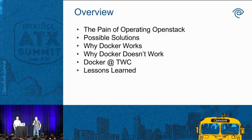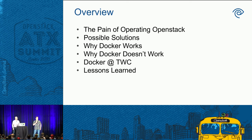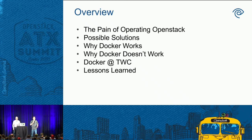An overview of what we're going to talk about today: first, we view ourselves as operators, and we'll share some grievances and talk about the pain of operating OpenStack and some pain points that started us on this journey. We'll talk about possible solutions — today is very Docker-centric, but there are alternatives. We'll cover why Docker worked so well for us, what problems it solved, why Docker didn't work in some cases, more detail about Docker at Time Warner Cable, and then we'll wrap up with some lessons learned.